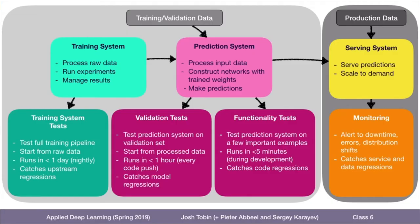The first slide I really like is this overview of machine learning systems. You have your training system, which is combined with your training and validation data to create a prediction system, which is then served into production. The key concept here is the different types of tests that you might have for the different stages of this code base. You have tests on your training system — things like, if you push some update to your code, is it breaking your ability to achieve a certain score on your training set? These are longer tests that take maybe up to a day to run.